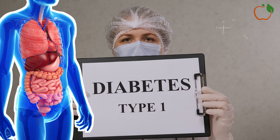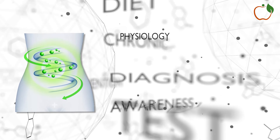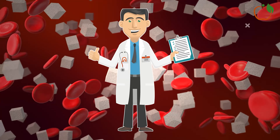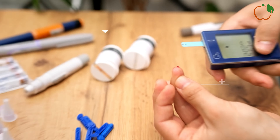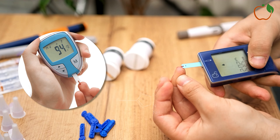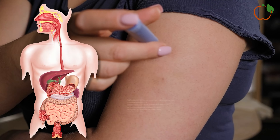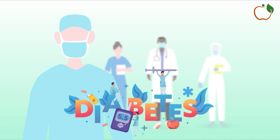Diabetes, a chronic metabolic disorder, has become a global health crisis affecting millions of people worldwide. While often portrayed as a manageable condition, the reality is that uncontrolled diabetes can wreak havoc on the human body, leading to a cascade of devastating complications that can impact nearly every organ system. In this video, we'll delve into the intricate ways diabetes destroys the human body, shedding light on the dire consequences of this insidious disease.